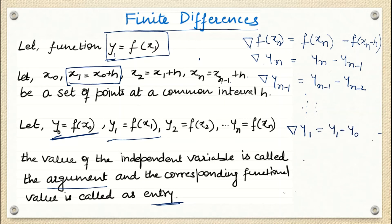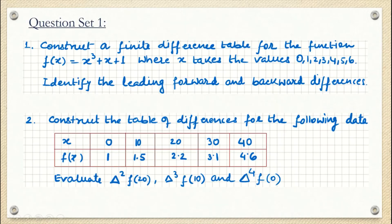We are going to solve two questions under finite differences. The first question is: construct a finite difference table for the function f(x) = x³ + x + 1 where x takes the values 0, 1, 2, 3, 4, 5, 6. Also identify the leading forward and backward differences.